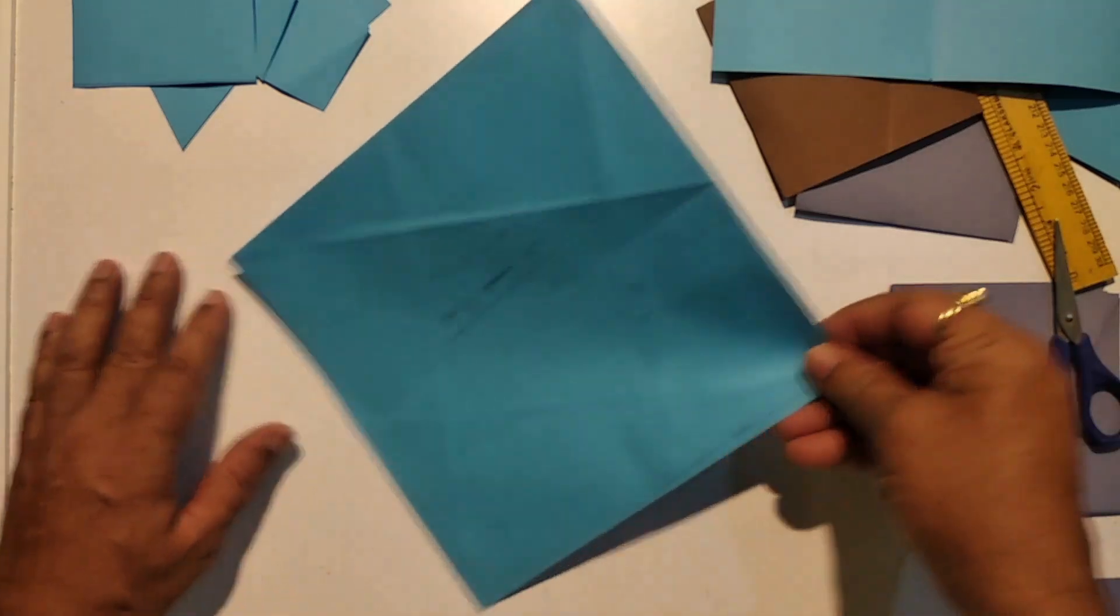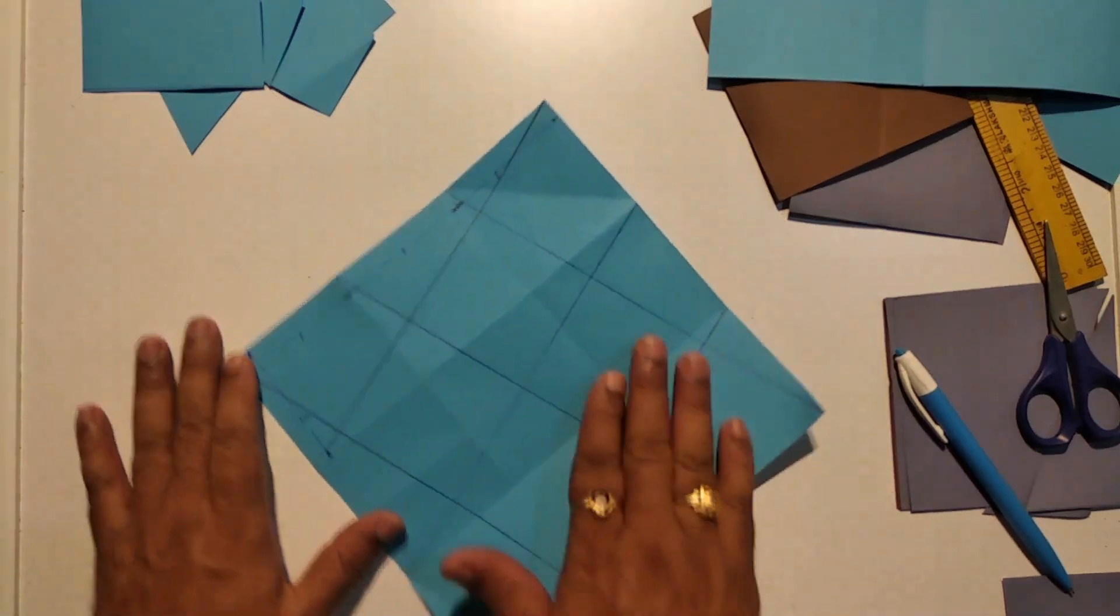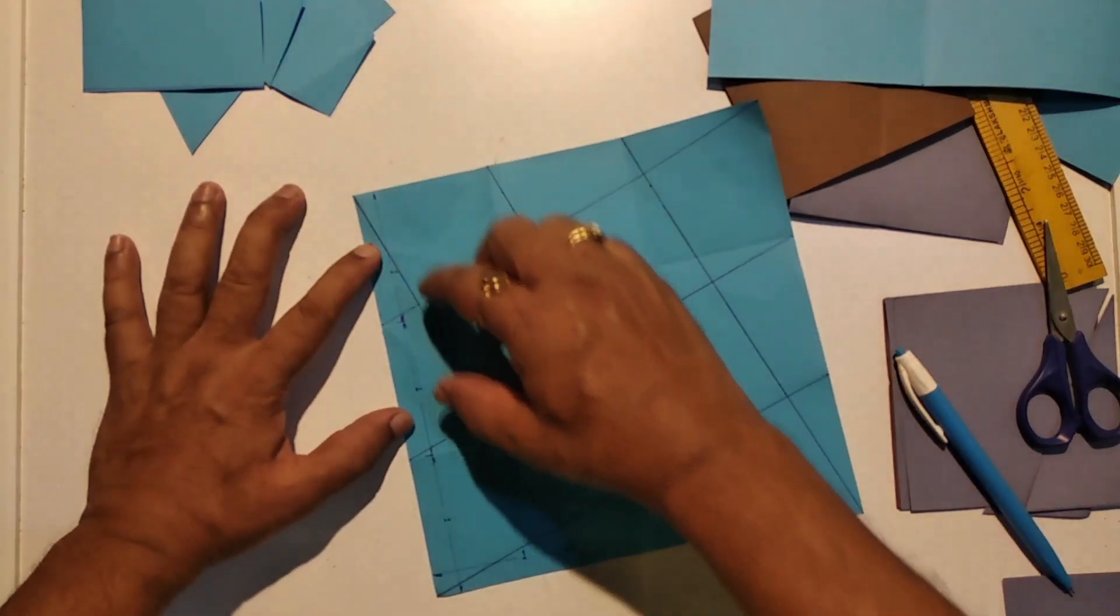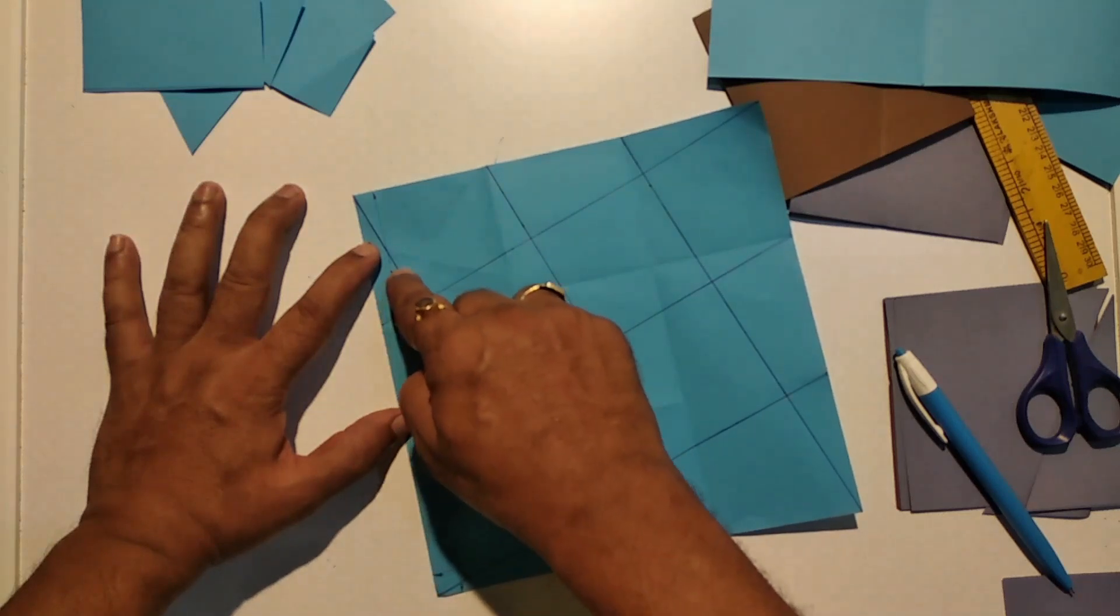We have actually bisected each side. We can now trisect each side. How to trisect is one more video in our channel, and the side is three units.